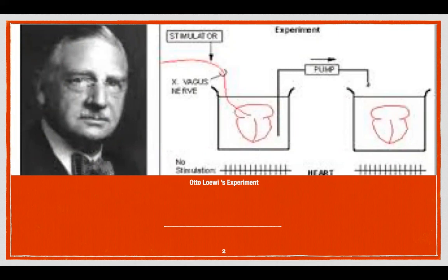The next day he performed the experiment in which he took one heart in which the vagus nerve was intact and another heart in which the vagus nerve was denervated. Both the hearts were connected. When the heart with the intact vagus nerve was stimulated, its heart rate decreased, but the heart rate decreased in the denervated heart also. So Loewi's hypothesis is that a substance is released from heart 1 which decreases the heart rate in heart 2. He called this 'vagus stuff.' Later, Henry Dale identified it to be acetylcholine.